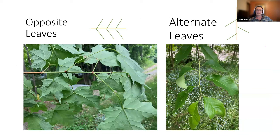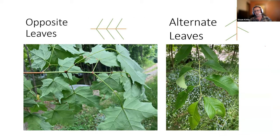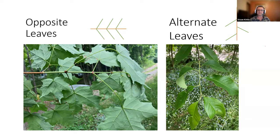Here's an example of opposite leaves — a sugar maple where leaves come out of the stem directly across from each other — versus alternate leaves, which are staggered along the stem. Even if you're photographing a flower, show where the leaves are. On the stem side: here's a purple loosestrife with a square stem, clearly visible in the photo from IMAP Invasives, with leaves growing across from each other. And dandelions have a round stem for comparison.